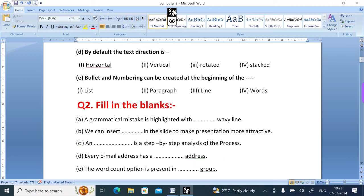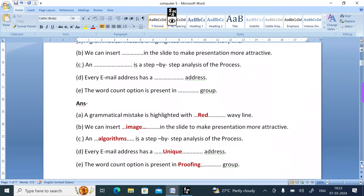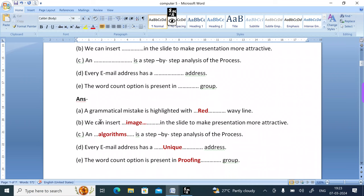First question: A grammatical mistake is highlighted with wavy line. B: We can insert in the slide to make presentation more attractive. C: Dash is a step by step analysis of the process. D: Every email address has a dash address. E: The word count option is present in dash group. Let's see the answers: A grammatical mistake is highlighted with red wavy line. B: We can insert images in the slide to make presentation more attractive. C: An algorithm is a step by step analysis of the process. D: Every email address has a unique address. E: The word count option is present in proofing group.